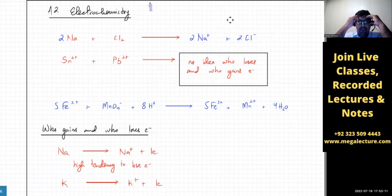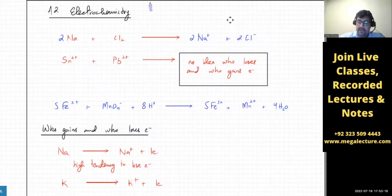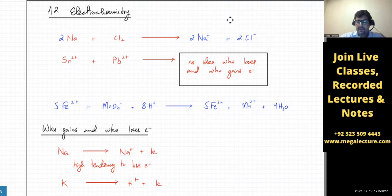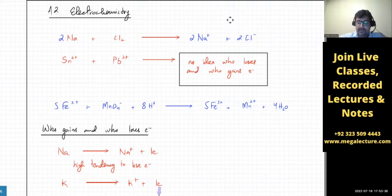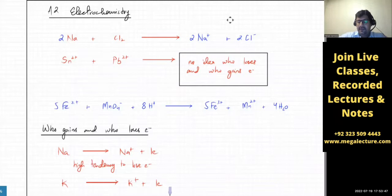Yesterday we discussed how do you know whether something is going to lose electrons or gain electrons. Sometimes you know — sodium is very reactive, so it likes to lose electrons. But for other substances like copper one-plus, I don't know whether it wants to form copper two-plus, get oxidized, or get reduced. So there are lots of compounds for which we have no idea what they're going to do.